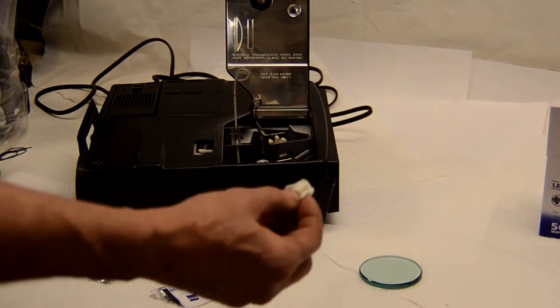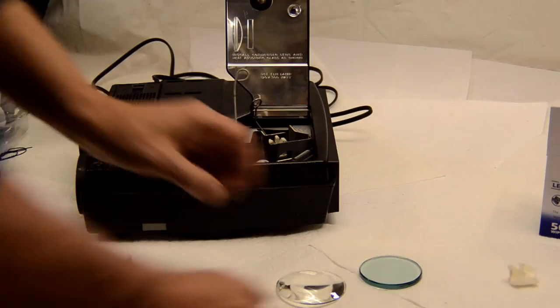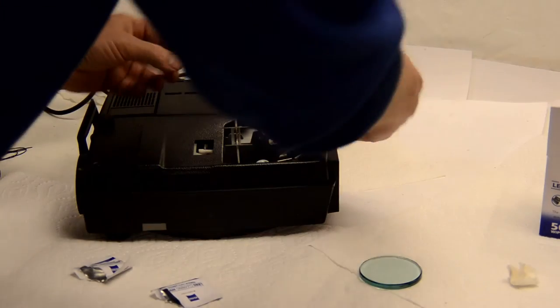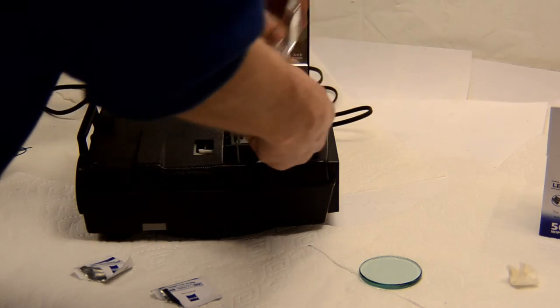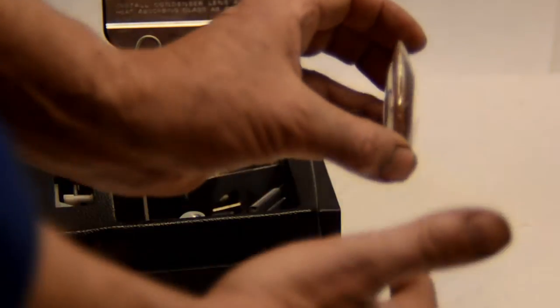Check this lens. That one is also nice and clean. OK, we just toss them back in here. Make sure you get this the right direction. When I say make sure you get this the right direction, the most concave or convex part of the lens faces the back towards the lamp. The flatter side goes forward.